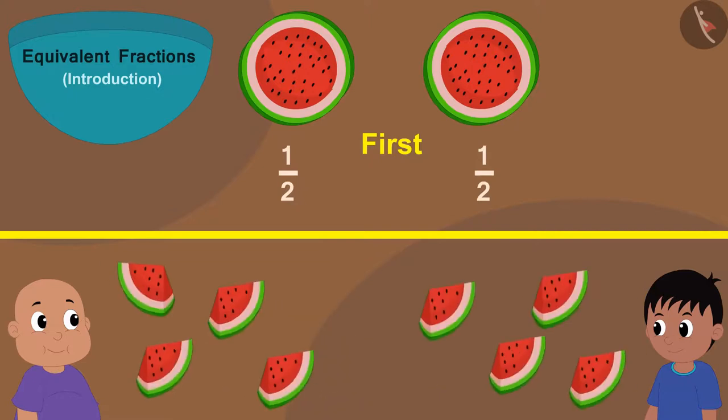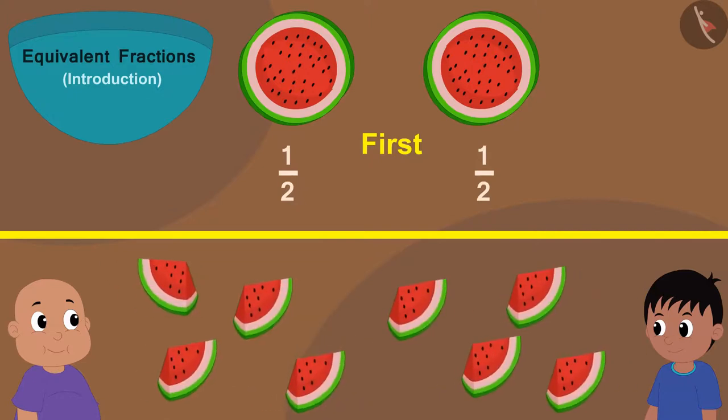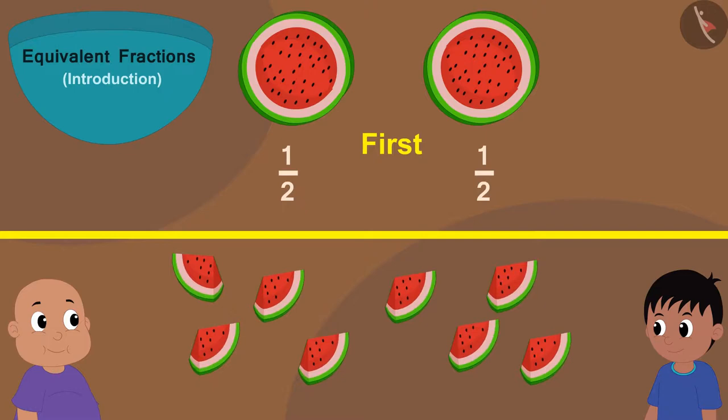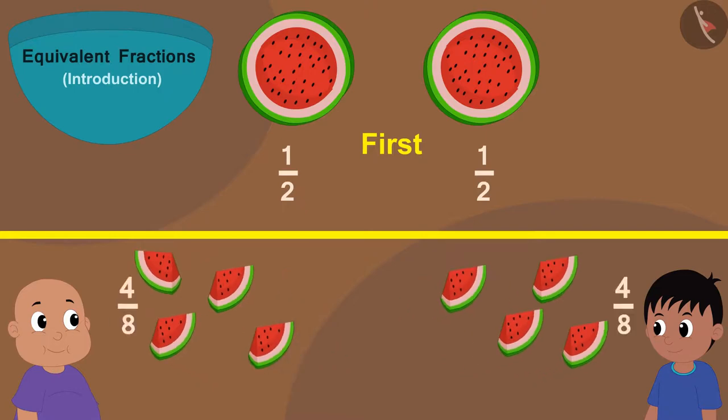Yes! Now, both will get four parts each, that is, four parts out of eight. We can write the fraction of the watermelon given to Raju or Bablu in this way as four by eight. Because both are getting four parts out of the total eight parts.